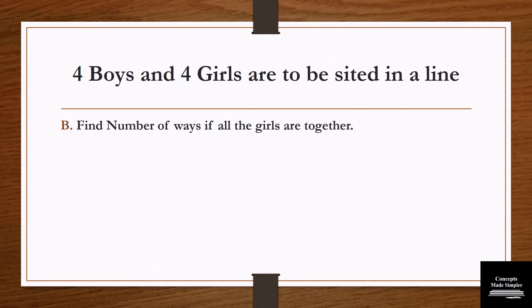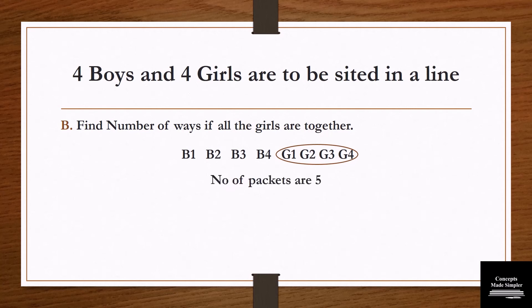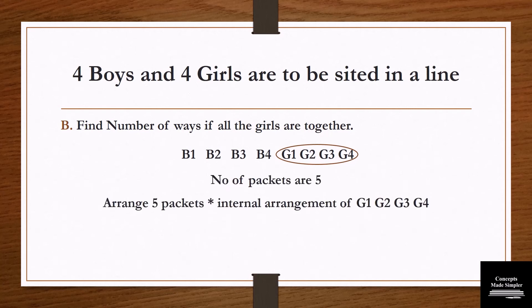The next question: find the number of ways if all the girls are together. Since all girls are always together, go with the string method — tie all the girls with a string. Number of packets is 5. Final solution: arrangement of 5 packets multiplied by internal arrangement of all the girls, which is 5 factorial × 4 factorial.